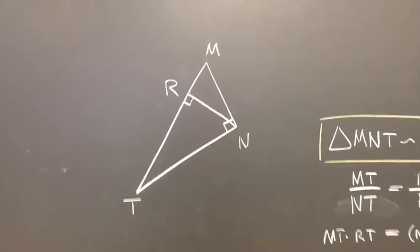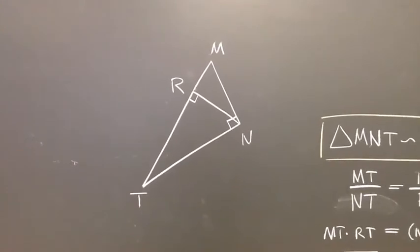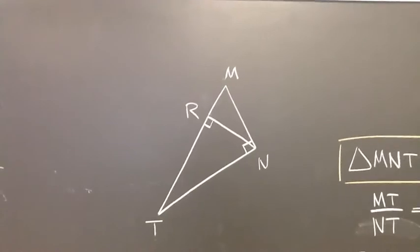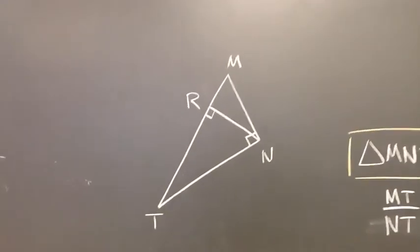So I've drawn a right triangle with an altitude in a different way on the board here, and I've used different letters. And so I want to show you how to write the similarity relationships.